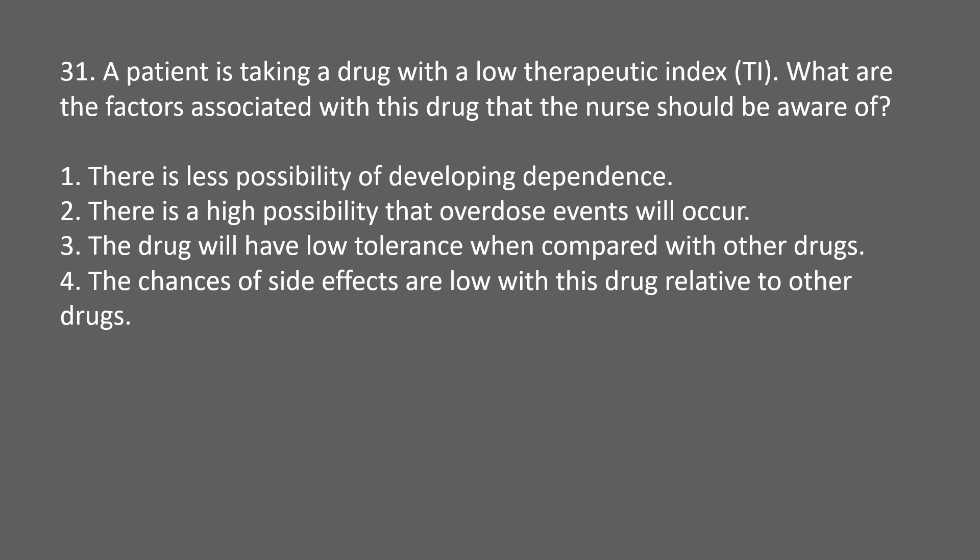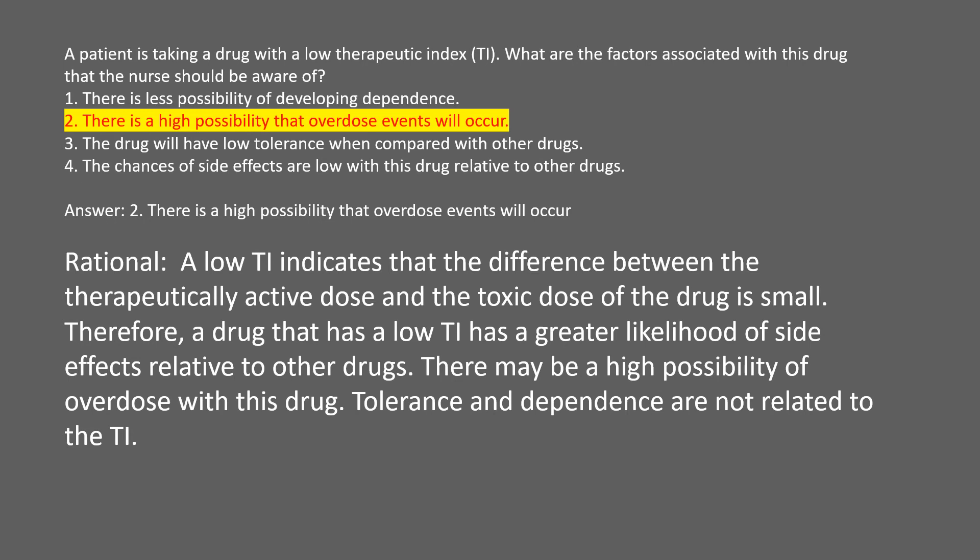A patient is taking a drug with a low therapeutic index (TI). What factors associated with this drug should the nurse be aware of? Answer: 2. There is a high possibility that overdose events will occur. Rational: a low TI indicates that the difference between the therapeutically active dose and the toxic dose is small, so there is a greater likelihood of side effects. Tolerance and dependence are not related to the TI.